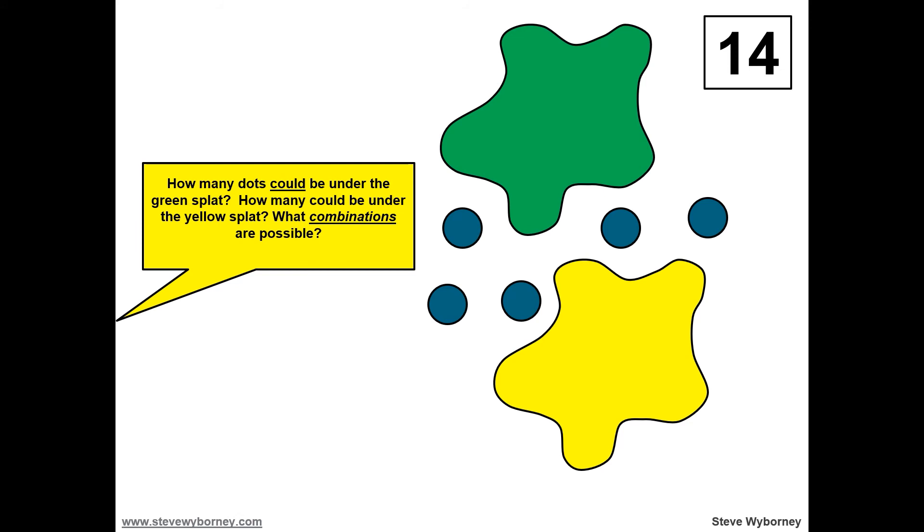If there is one dot under the green splat, how many would have to be under the yellow splat? There would have to be eight under the yellow splat. What other combinations make nine? You could have two dots under one and seven under the other. You could have six under one with three under the other. You could also have four dots and five dots under the splats.